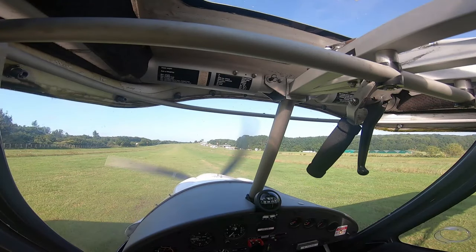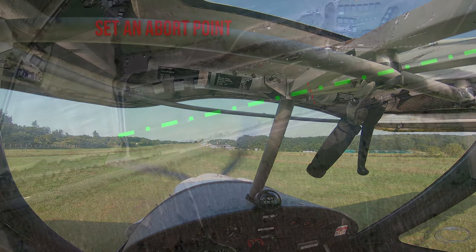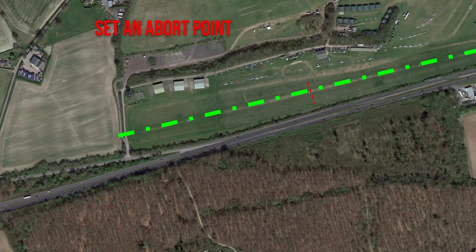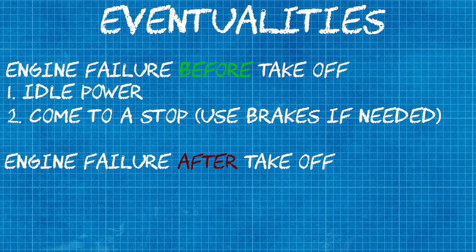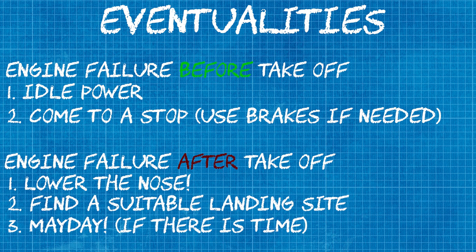We are now going to move our eyes halfway down the runway to set an abort point. This abort point will allow us to prepare for any eventualities that could occur during the takeoff run, such as an engine failure after takeoff or an engine failure before takeoff. If the engine fails before we have passed this abort point, we will simply come to a stop on the runway. However, if the engine fails after the abort point, we will lower the nose and do whatever procedure we can to bring the aircraft safely onto the ground.